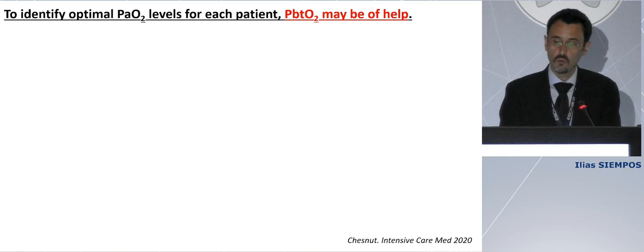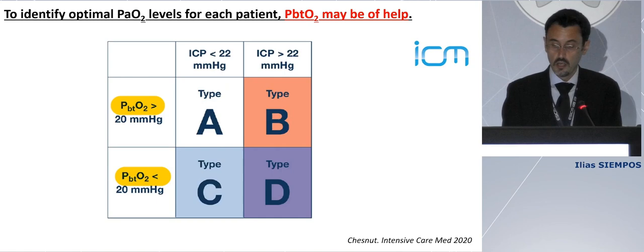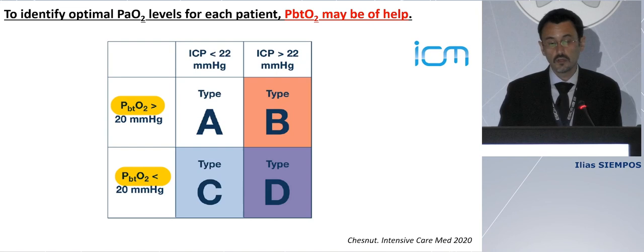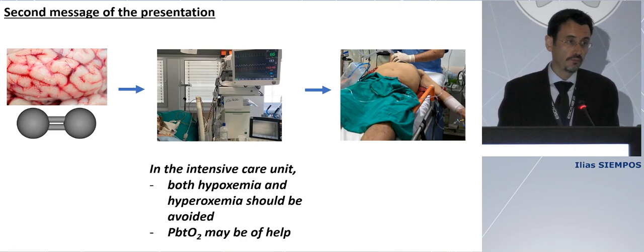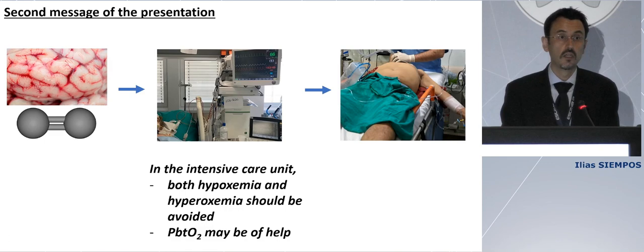That was the rationale behind a CBIC panel report published two years ago in Intensive Care Medicine, which recommended that clinicians should consider both intracranial pressure and brain tissue oxygenation in order to manage patients with traumatic brain injury. For full disclosure, in the ICU where I work, we are not yet familiar with brain tissue oxygen tension — we lack the device — but I think it is something we need to learn. The second message is: in the ICU, both hypoxemia and hyperoxemia should be avoided, and brain tissue oxygenation may be of help.